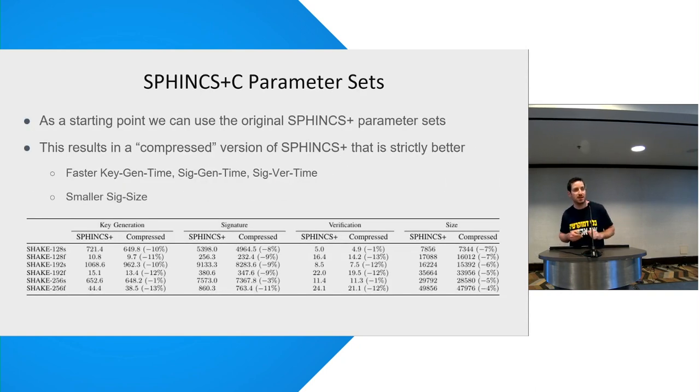So for SPHINCS, we can take the original parameters that were proposed and we can compress them. And we have something that is strictly better. It is smaller. It is faster. Everything is great.